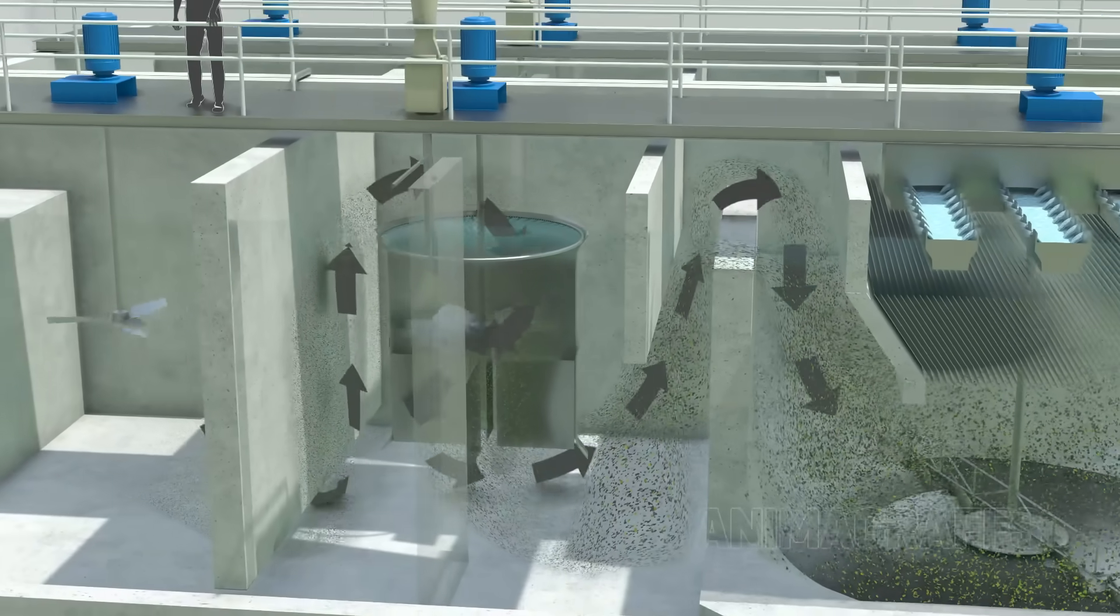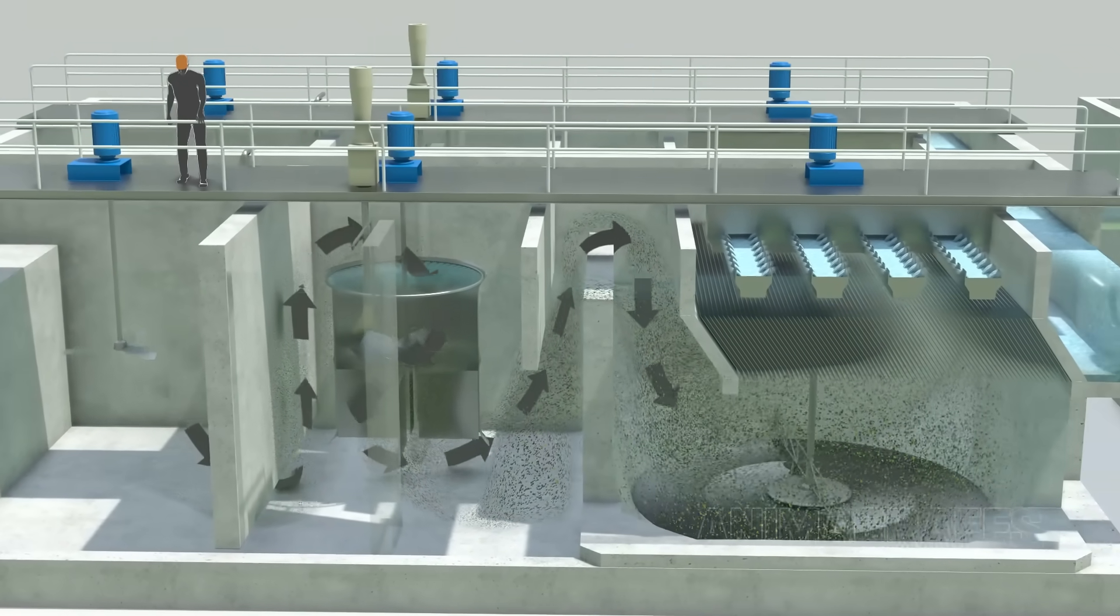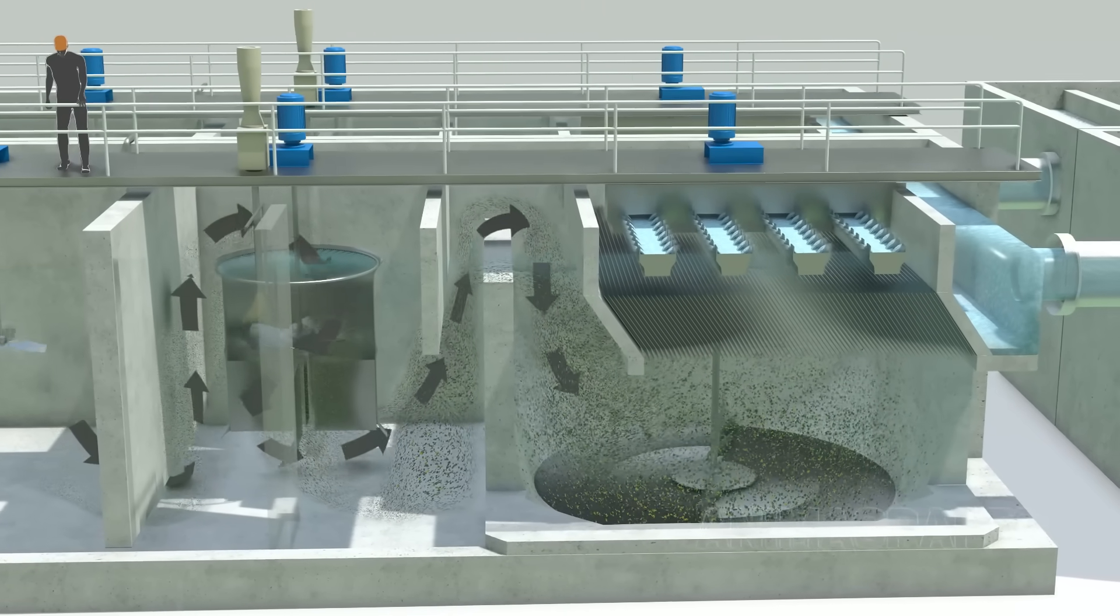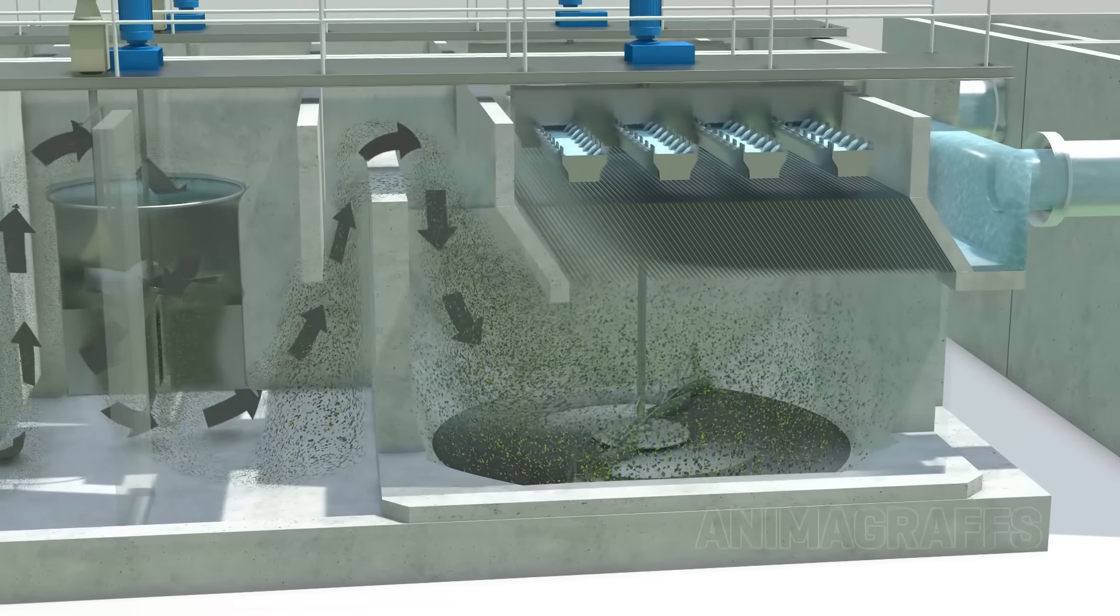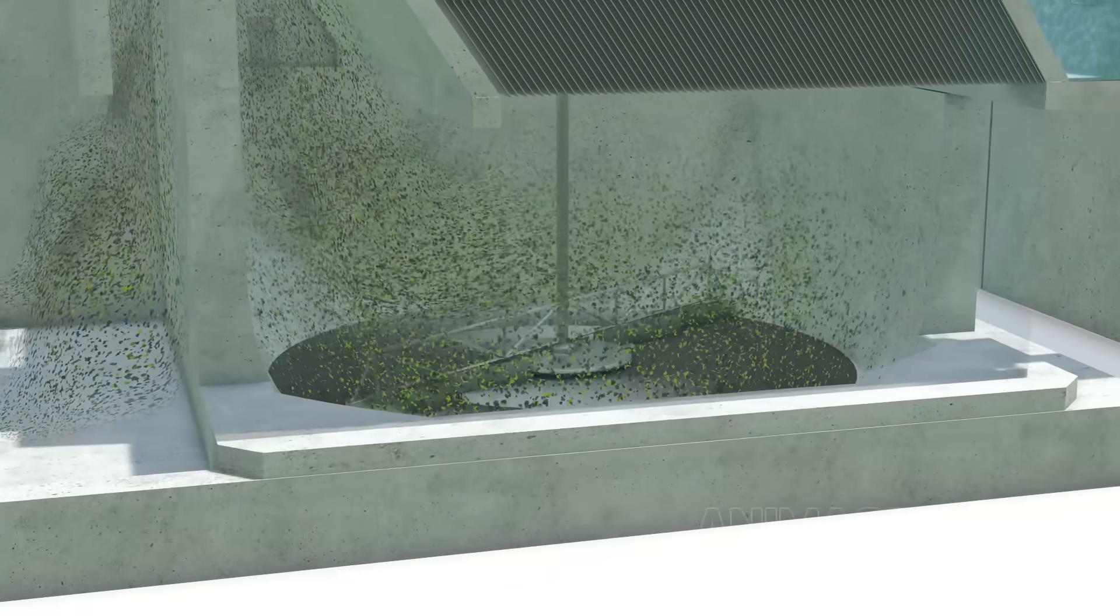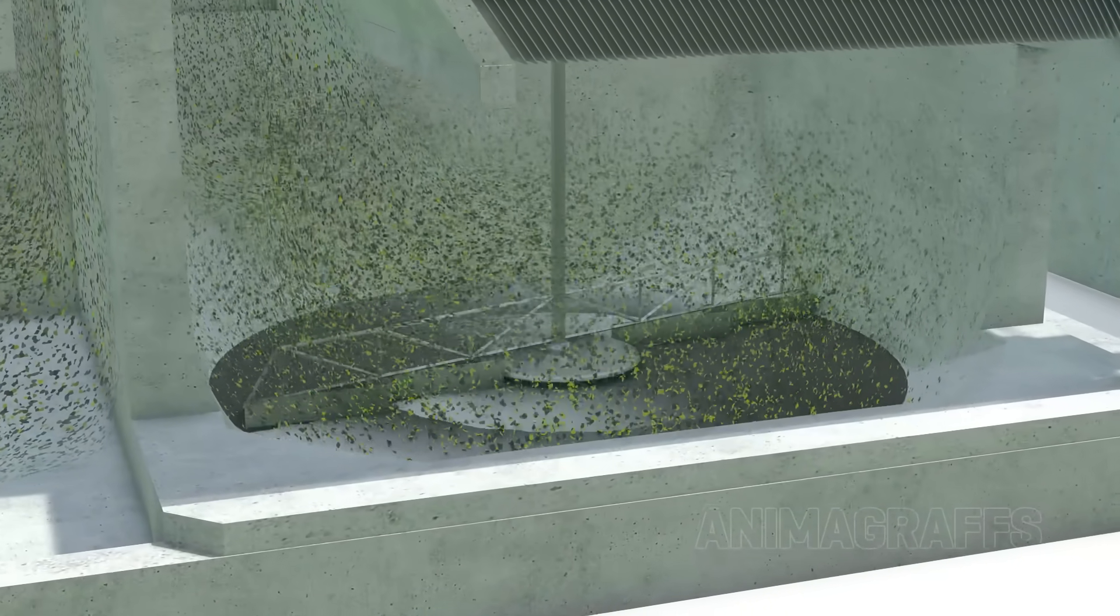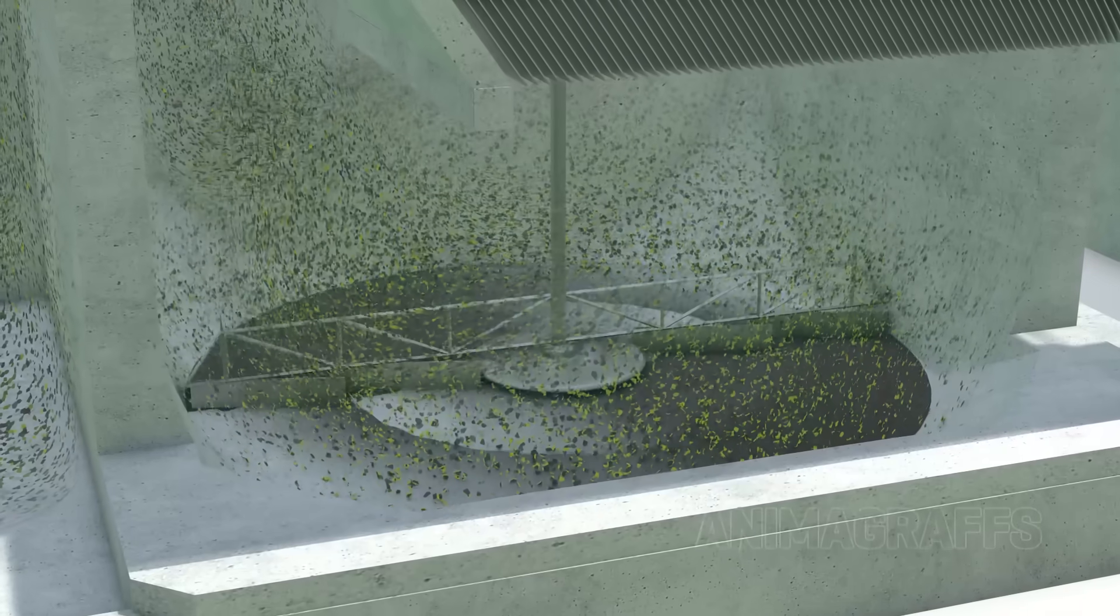The now flocculated water flows through a set of baffles to slow its turbulence for the settling process. As the water travels upwards, heavy flocc particles quickly settle to the bottom of the tank.